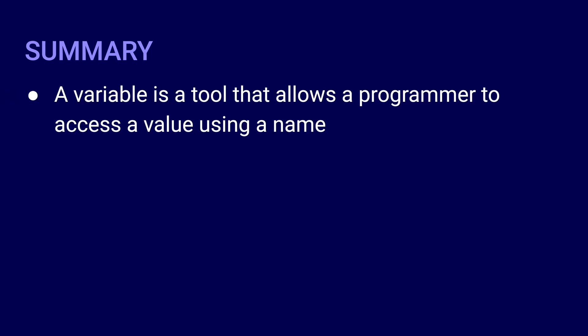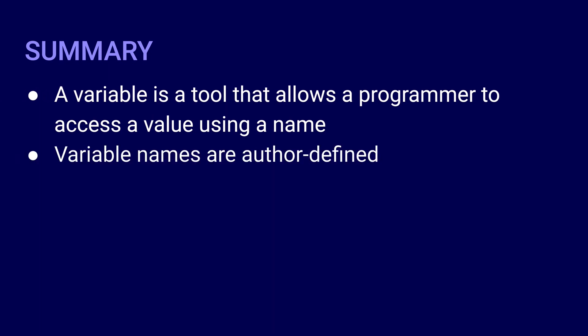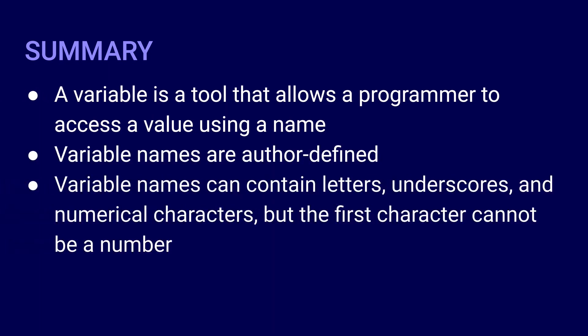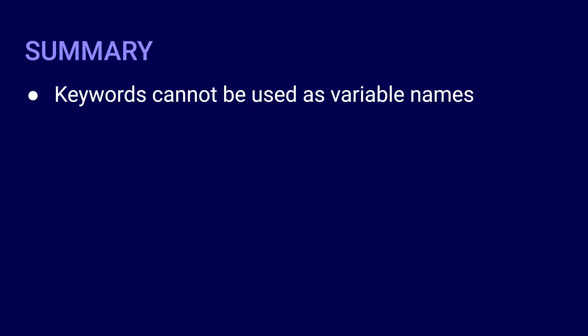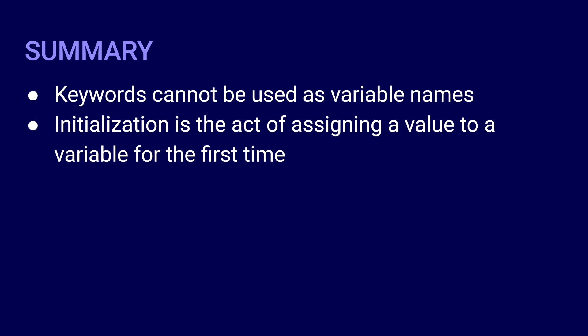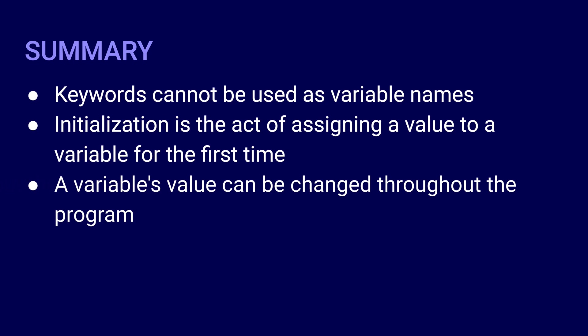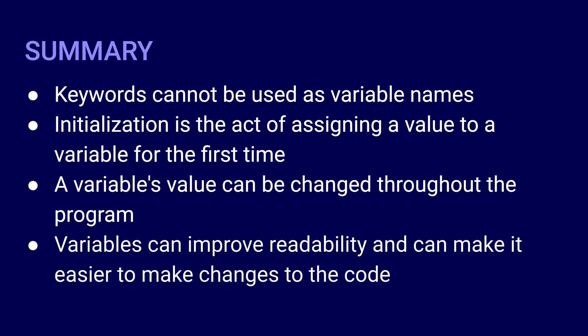To summarize this lesson, here are some important points. In programming, a variable is a tool that allows a programmer to access a value using a name. Variable names are author defined. Variable names can contain letters, underscores, and numerical characters, but the first character cannot be a numerical one. Variable names are case sensitive. Keywords of the language cannot be used as variable names because those words already have a special meaning in the language. Initialization is the act of assigning a value to a variable for the first time. A variable's value can be changed multiple times throughout the program. And finally, when used appropriately, variables can improve source code readability and can make it easier for the programmer to make changes to the code.